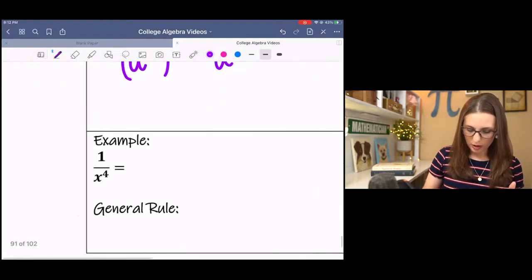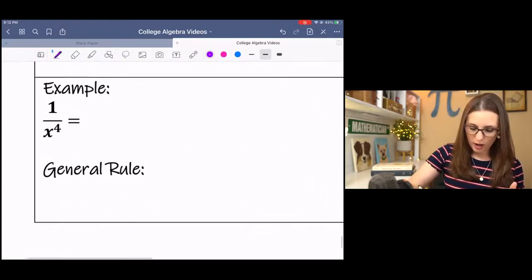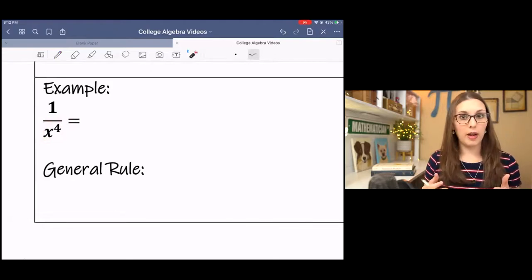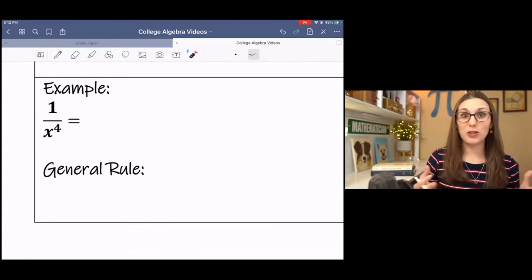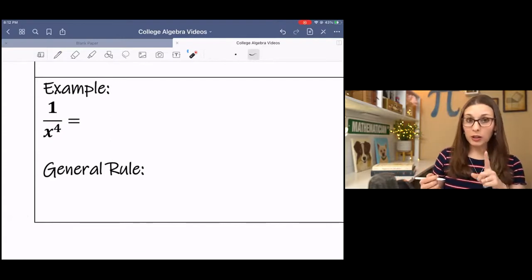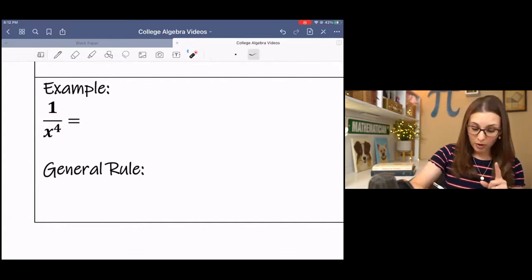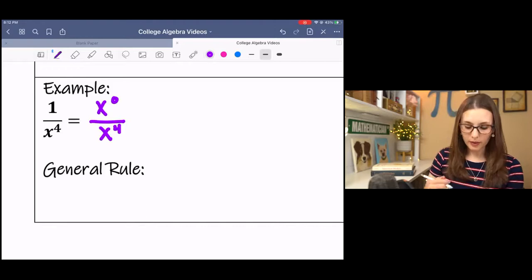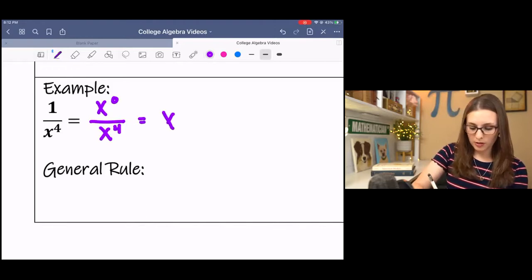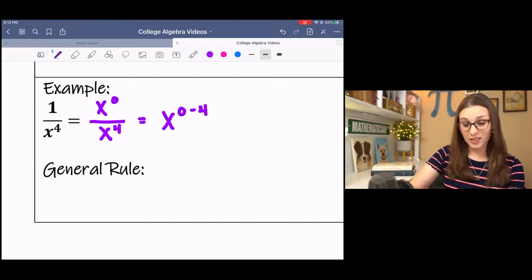Last example. We have a variable term in the denominator, and when you have a fraction, it translates into something in particular. I can rewrite 1 as x to the 0. And I'm going to leave x to the 4th. And then I can use my properties to subtract and then simplify to get negative 4.